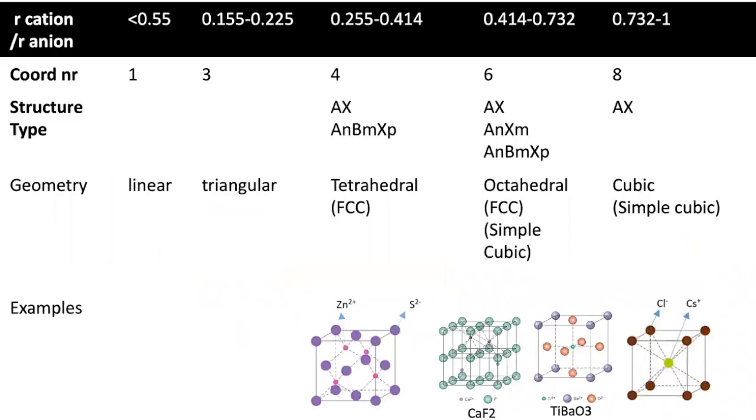The ratio of the cation and the anion will inherently influence the coordination number, which will influence the crystal structure type. In here, in this table, we can see the different ratios and the different coordination numbers that go with each ratio.